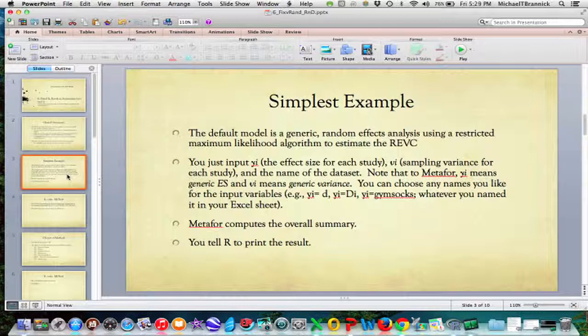You can substitute any name that you like for the input variable. So you can say y sub i equals d, y sub i equals capital D little i, y sub i equals gym socks, or whatever you want. Whatever came out of your Excel data sheet is going to be a generic effect size. Metafor is going to compute the overall summary for you and then you tell R to print the result.